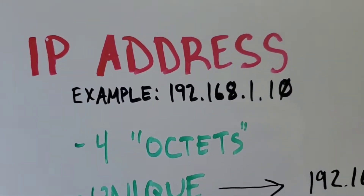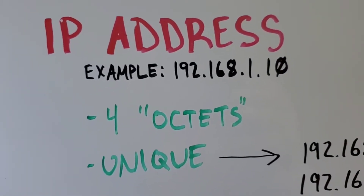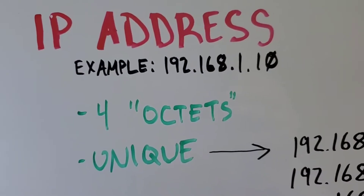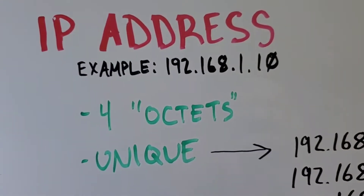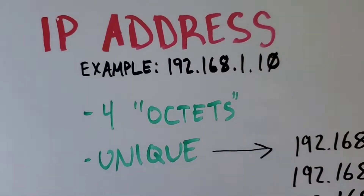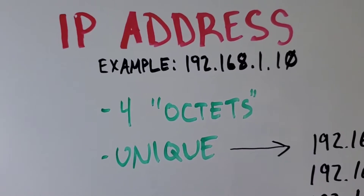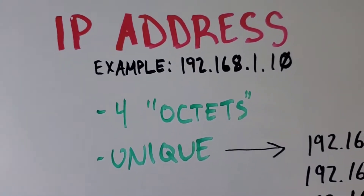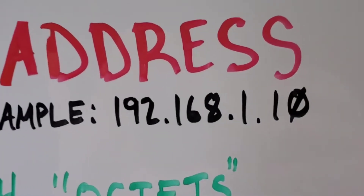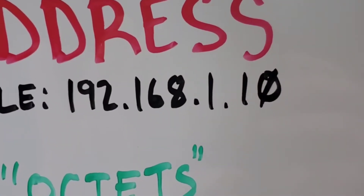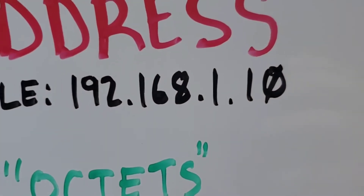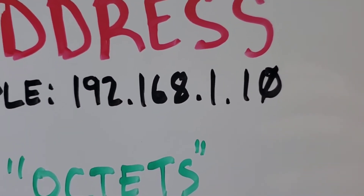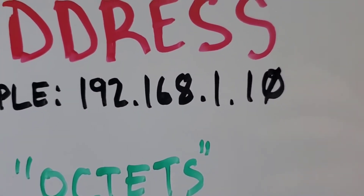The first one is the IP address. For example, 192.168.1.10 is the IP address of one device on your network. It has four octets. In this one, 192.168.1.10, there are four separate octets.